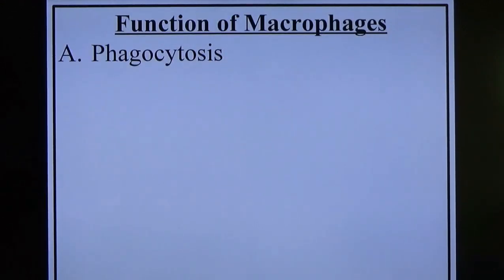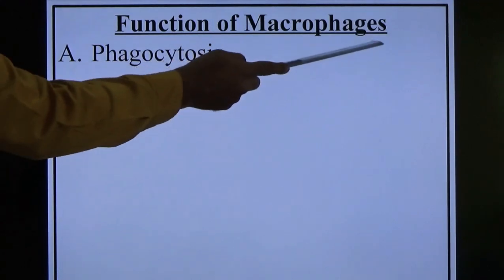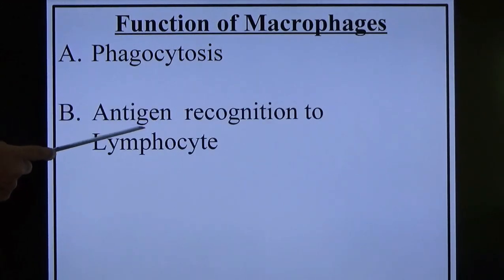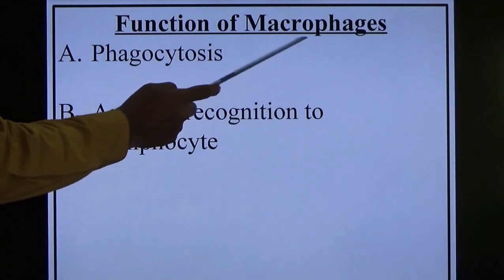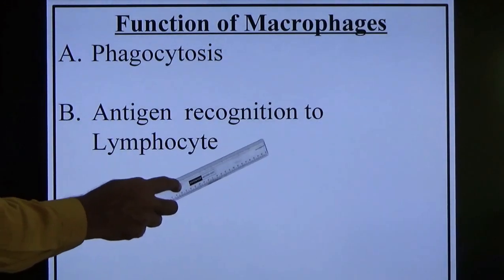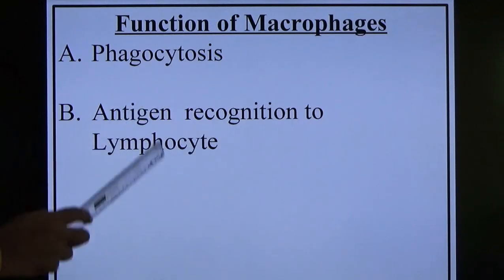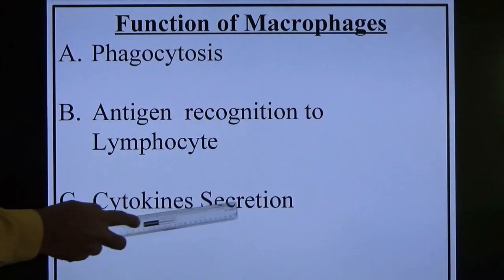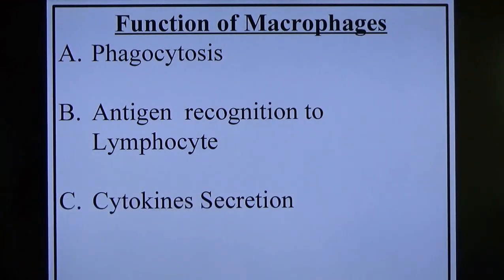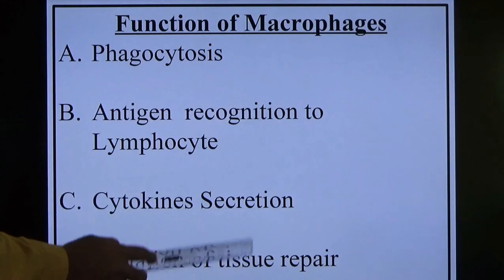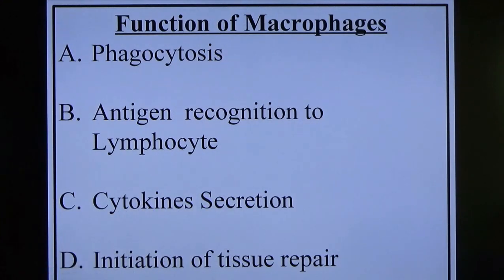The basic functions of macrophages: one is phagocytosis. After acute inflammation, in chronic inflammation, the primary cell is the macrophage — it kills the enemy. Second is antigen recognition presented to lymphocytes. After macrophages, first neutrophil comes to play, then macrophages, and then lymphocytes — T lymphocytes and B lymphocytes, mainly T lymphocytes. Macrophages recognize the enemy and present it to lymphocytes. Third is cytokine secretion — a type of chemical mediator. Fourth, very importantly, is initiation of tissue repair. Macrophages have a dual function.